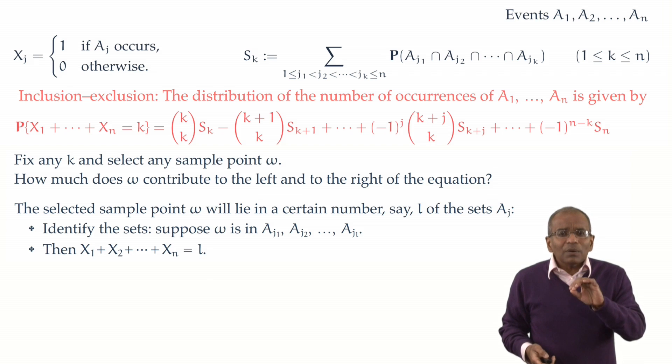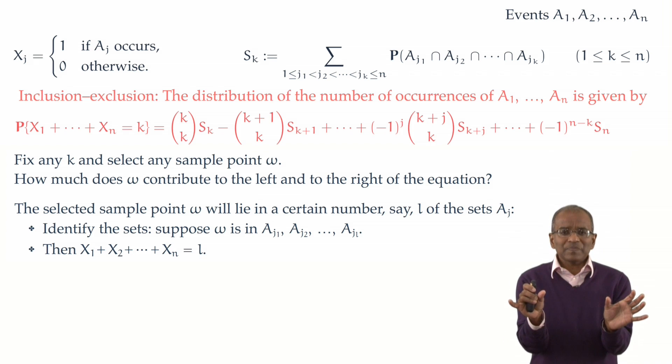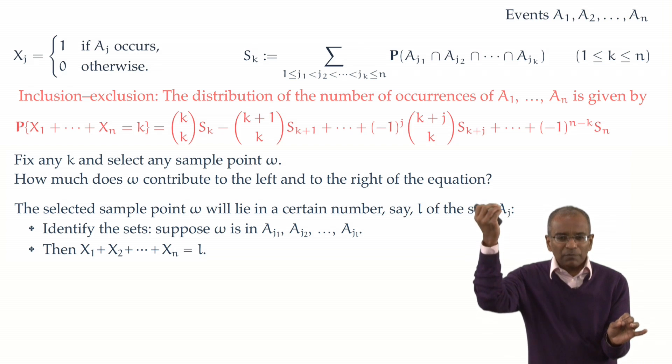Excellent. Now, once we understand this, now we've got an equation. If omega is in L of the events, then we know that the event on the left is triggered precisely when L is equal to k. Remember, k is some fixed value.